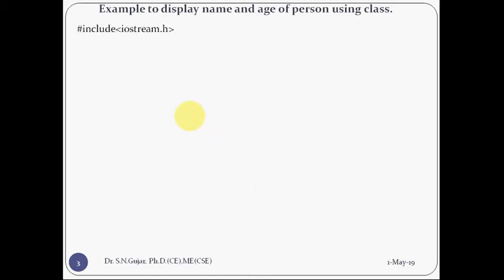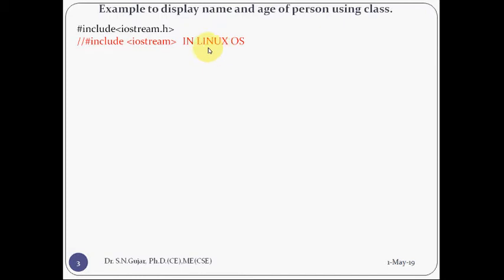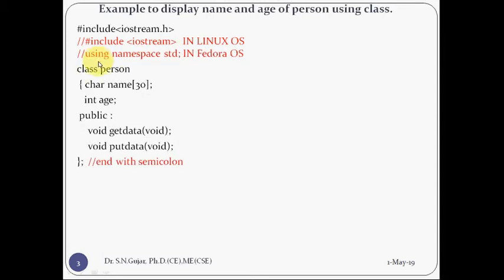Now see one example. From this example you are going to be really clear how we are going to write the program. The example is to display the name and age of a person using a class. First I am going to include iostream.h. If you are using Turbo C++, Linux, Ubuntu or Fedora, you have to include iostream and then write 'using namespace standard'.